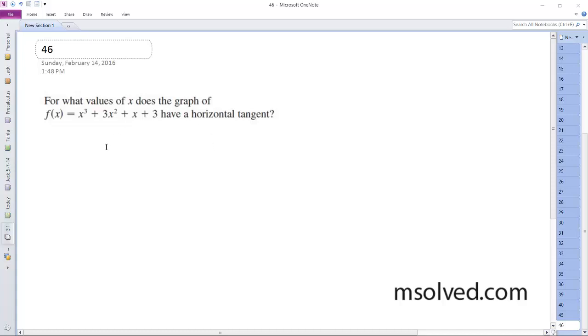Okay, so we want to find the values of x where this has a horizontal tangent. First, find the derivative, so it's going to be 3x squared plus 6x plus 1.